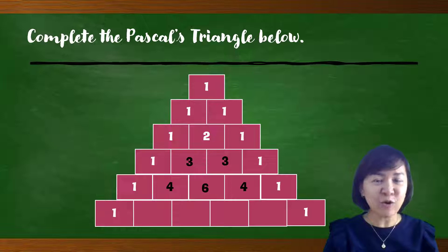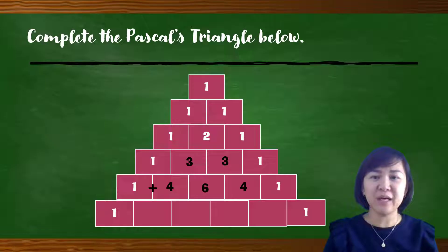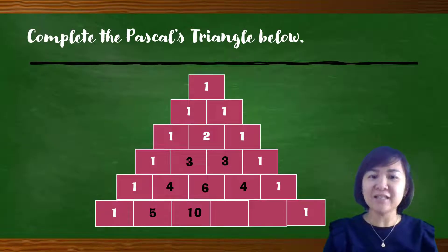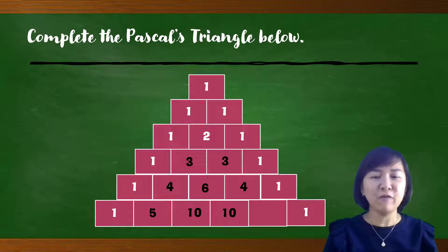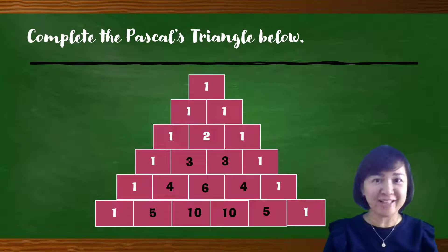Can you get the last row? Let's do it together. From the previous row: 1 plus 4 gives 5, 4 plus 6 gives 10, 6 plus 4 gives 10 also, and 4 plus 1 gives 5. Follow my steps to complete Pascal's Triangle. If we continue for the next row, can you do it?